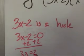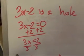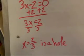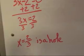Well, I need to solve it. So I would add 2 to both sides first. Then I would divide both sides by 3. So x equals 2 thirds is the equation that represents the value of our hole or our removable discontinuity.